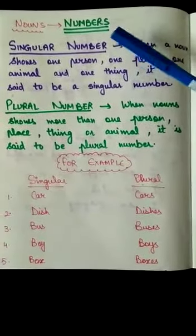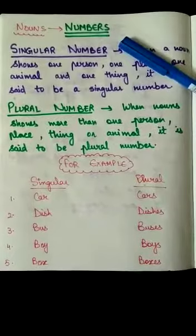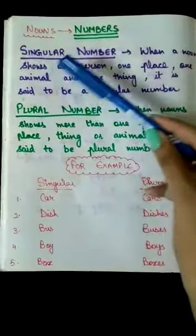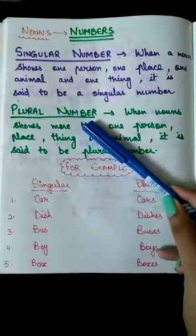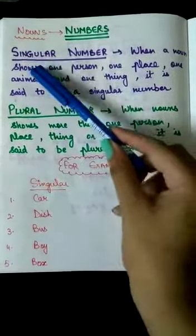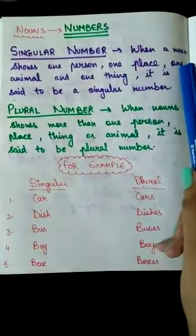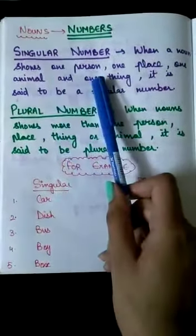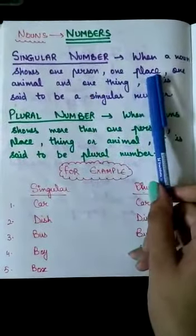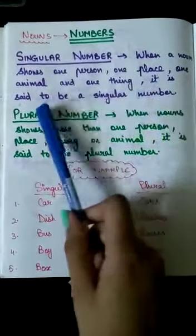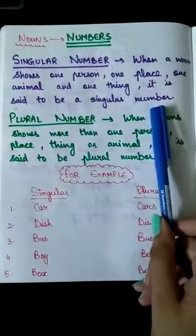Now what are numbers? So as we know, we are having two kinds of numbers, the singular number and the plural number. What is singular number? When a noun shows one person, one place, one animal and one thing, it is said to be a singular number.